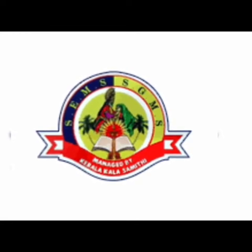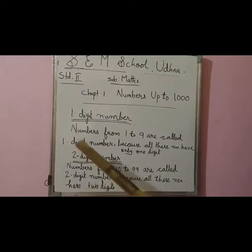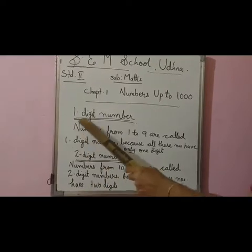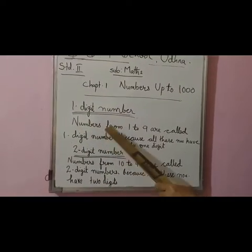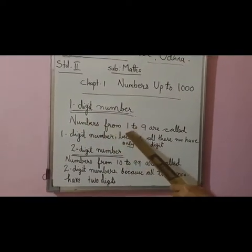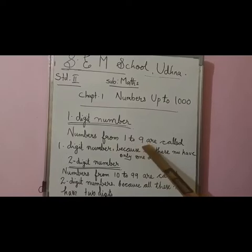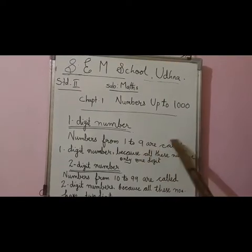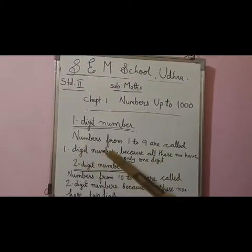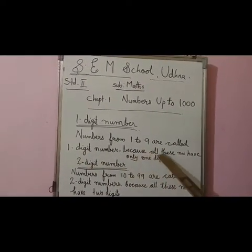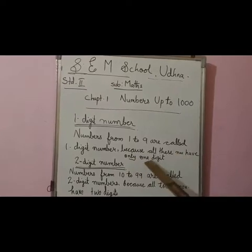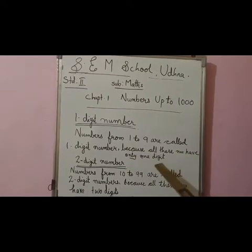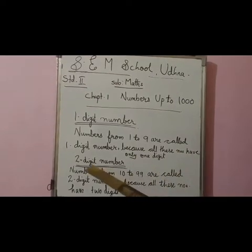In this chapter, the first topic is one digit number. Numbers from 1 to 9 are called one digit numbers because all these numbers have only one digit.